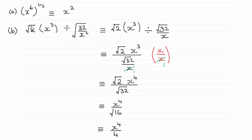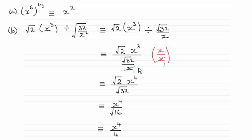For this second question, simplify root 2x cubed, all divided by the root of 32 over x squared. What I've done is taken this part and used the rule that when you're square rooting a fraction, it's the same as the root of the top over the root of the bottom. I've left root 32 as root 32, but the square root of x squared is x. And then, rather than use the division sign, I've created this particular form just by writing the division line here.